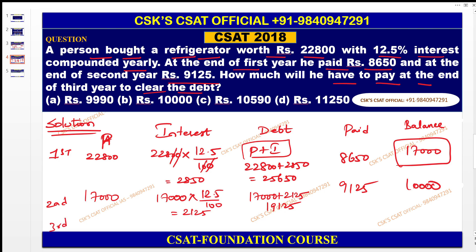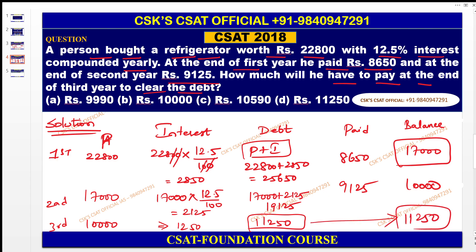In the third year, the remaining principal is 10,000. The interest is 12.5 percent of 10,000 = 1,250. So the total depth is 10,000 + 1,250 = 11,250. He has to pay 11,250 fully. The answer here is option D.